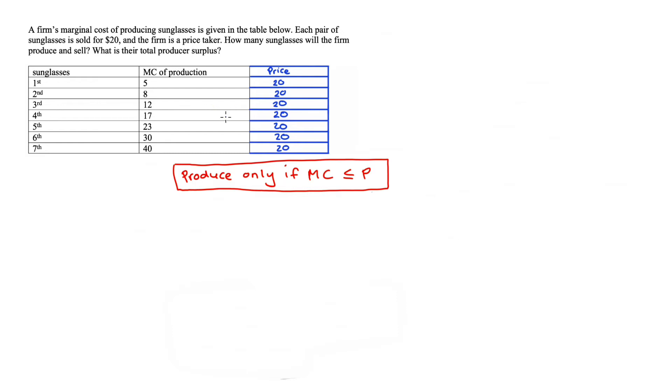But at this fifth pair, the marginal cost becomes higher than the price, so $23 is not lower than $20. So using our rule here, the firm will definitely not produce that fifth unit and will only produce four pairs of sunglasses in this scenario.